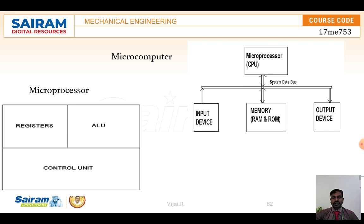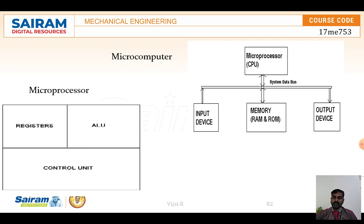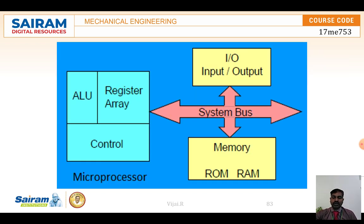The CPU consists of the arithmetic logic unit, registers, and the control unit. Whatever data is taken from memory goes to the registers as temporary storage, then goes to the arithmetic logic unit where logic processing and calculations are done. The result is then sent to the control unit, which controls the operations.